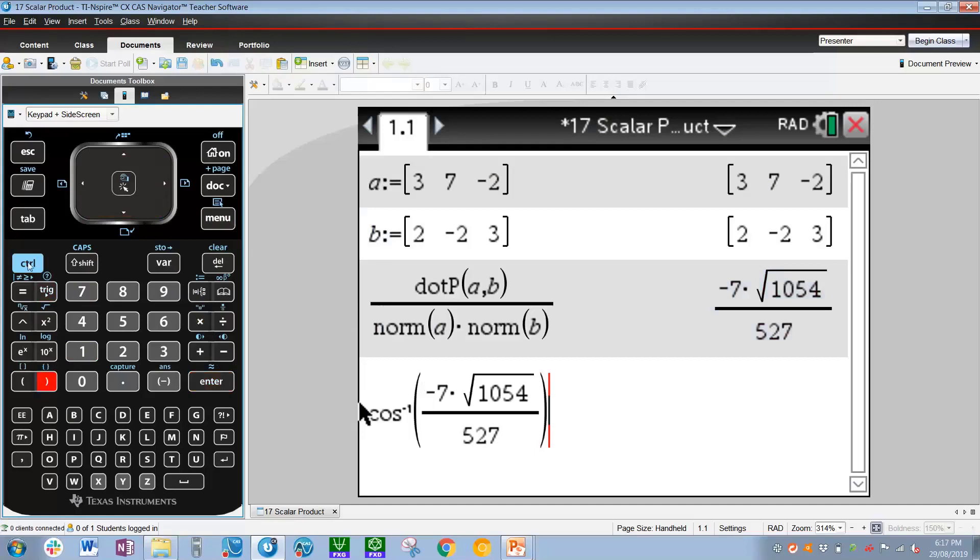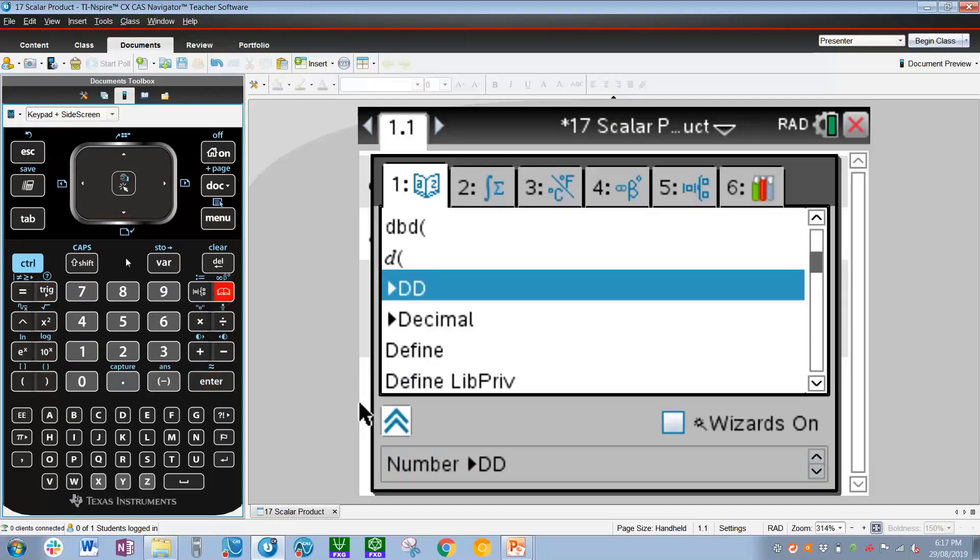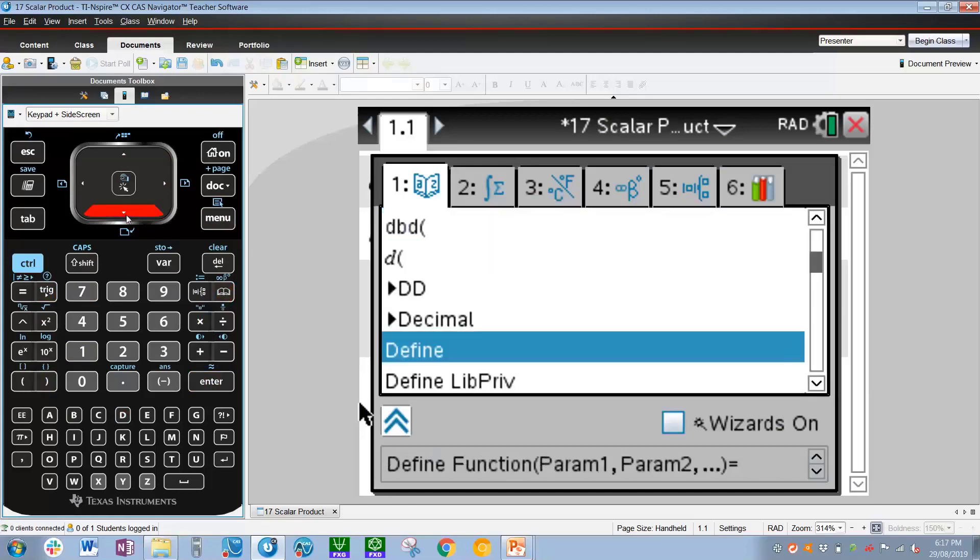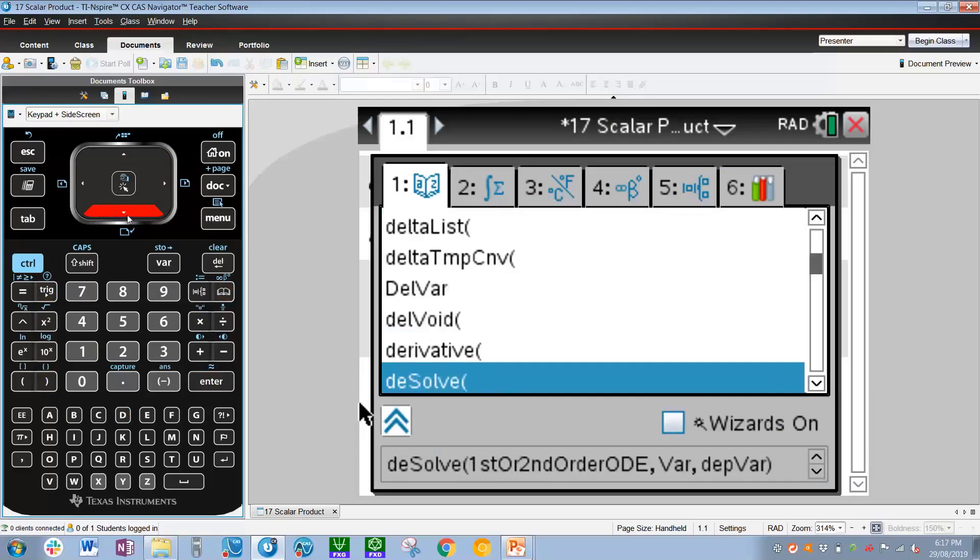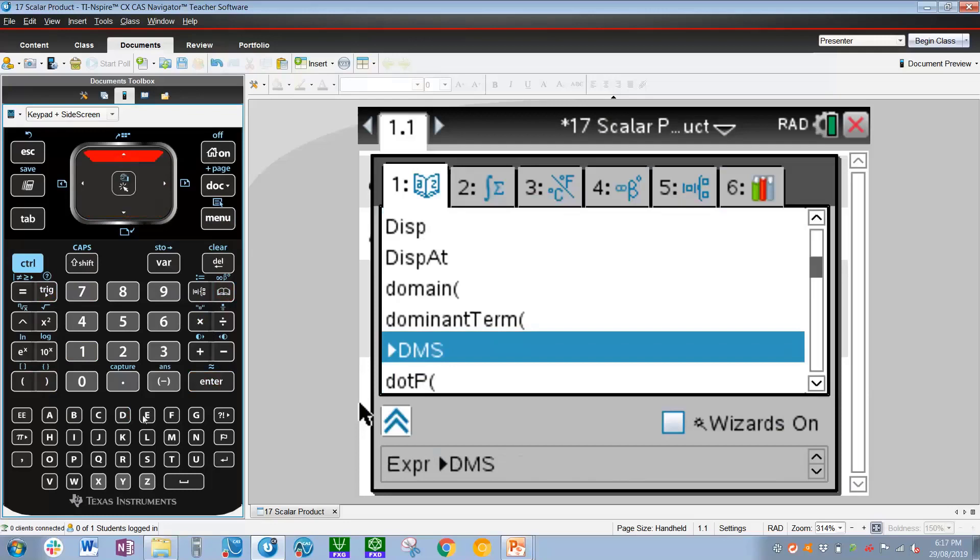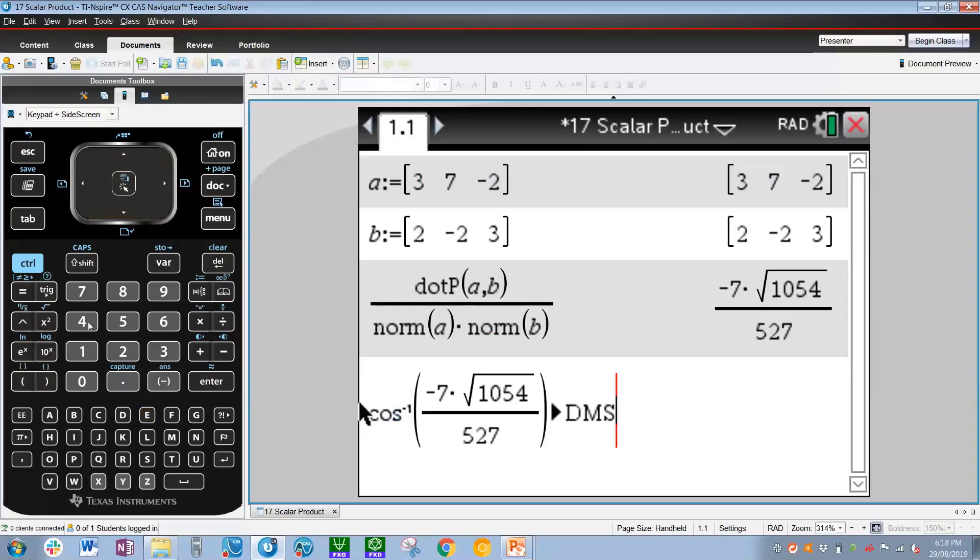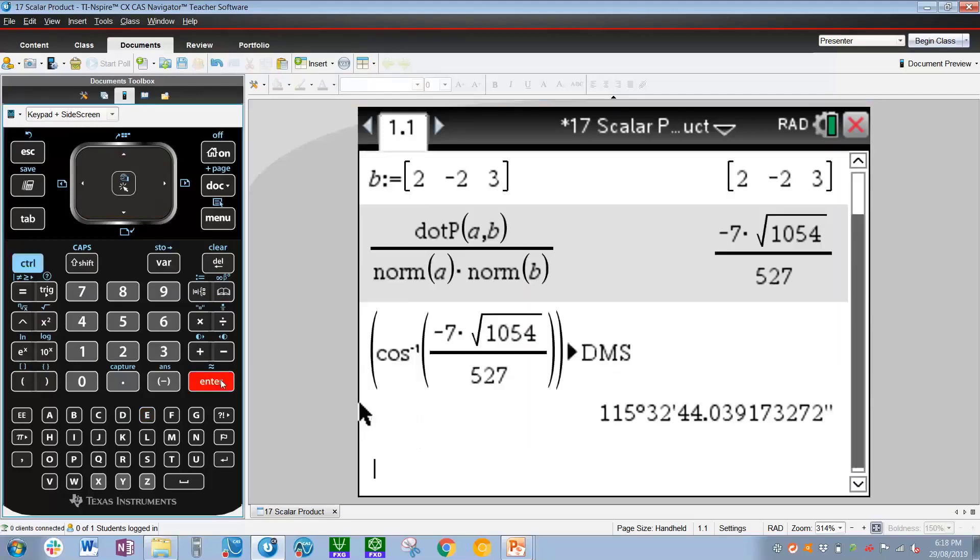Close the bracket, and now to get the nearest minute, we have to press the book or the catalog, and scroll down after pressing D to find DMS. So scroll down until we get DMS, which is here. A quicker way to get to DMS is to press E and then press up a couple of times. So once you're at DMS, press enter, and then press control enter to approximate.